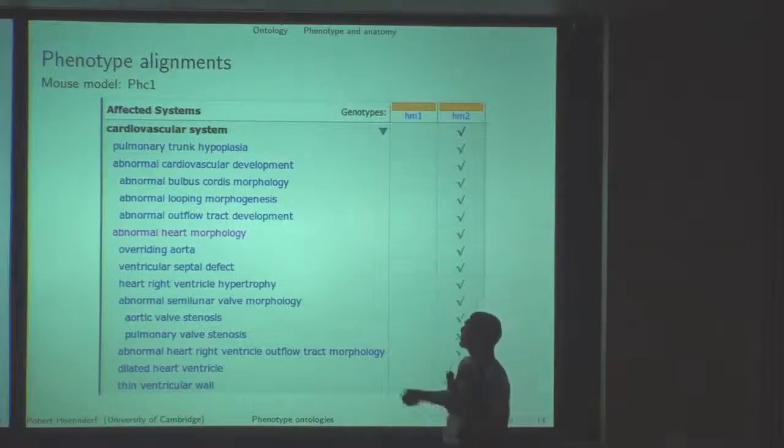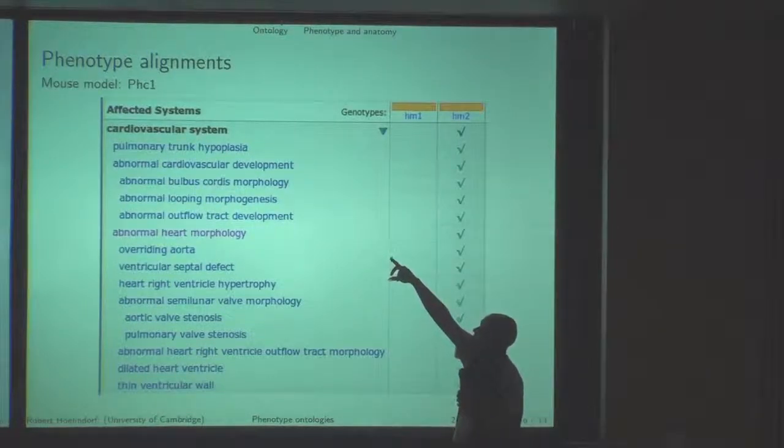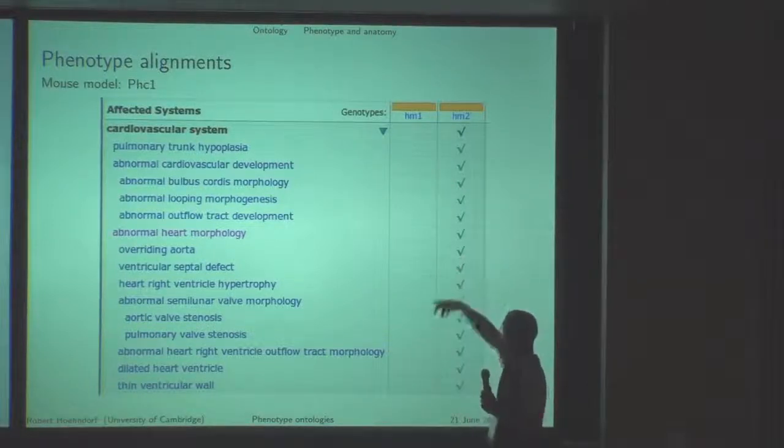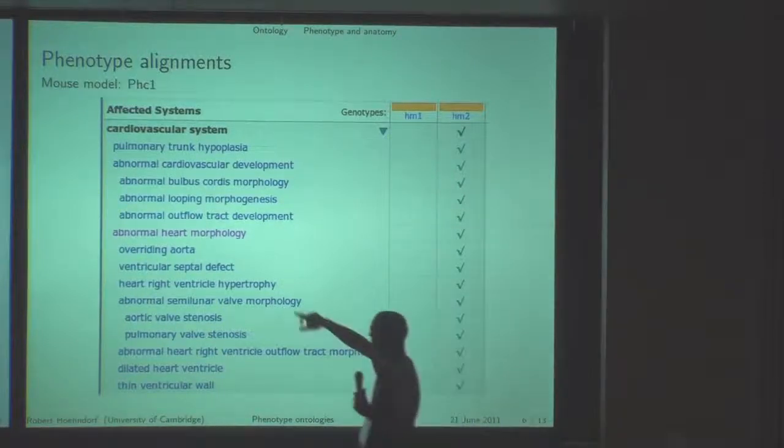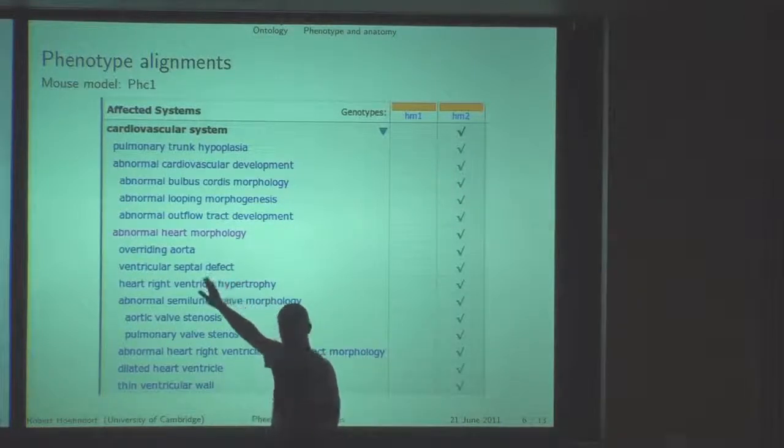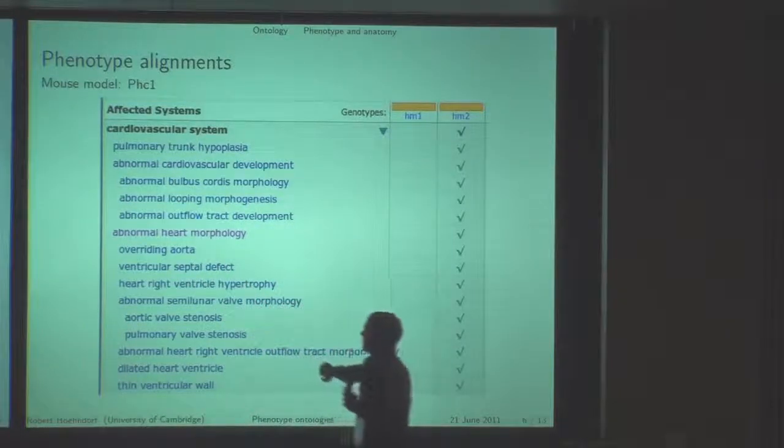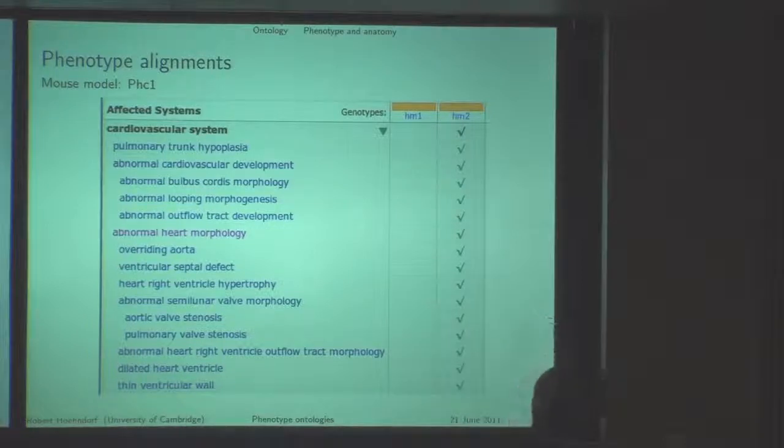this is a knockout for the PHC1 gene in mice. These are just some aspects of the mouse model, some of the phenotypes, and we can see there seems to be some overlap, at least judging from the names: overriding aorta, ventricular septal defect, and so on. But all of these are characterized in terms of mouse phenotypes.